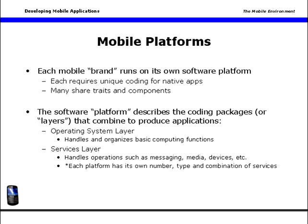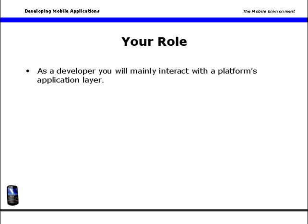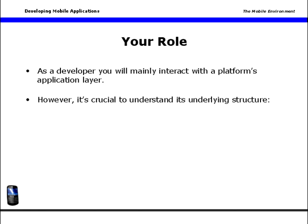The application layer is the layer that actually executes your software applications. As a developer, you will primarily interact with the platform at the application layer. Your apps will execute against the platform's application traits and capabilities. However, it's crucial for you to know how your app interacts with all of the underlying elements. That way, you can design the most efficient and yet robust application.